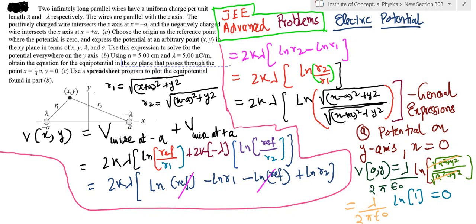I'm not deriving the potential due to an infinite wire, but I have written the direct expression for potential for an infinite wire at a given distance. The two distances involved are r1 and r2, measured from each wire to the point at which the potential is to be found. This numerical is a bit complicated, but listen carefully, see the diagrams, and you will be able to understand.